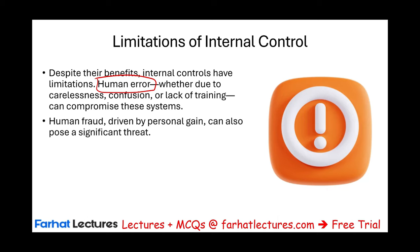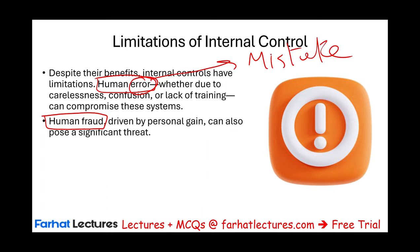Human error is a problem, but what's more of a problem is human fraud. What's the difference between error and fraud? Error is a mistake — when you make a mistake, you usually don't cover your tracks, it's easier to discover, and it's not intentional. You misinterpreted an instruction, didn't understand it, were lazy, confused, or tired. That's an error.